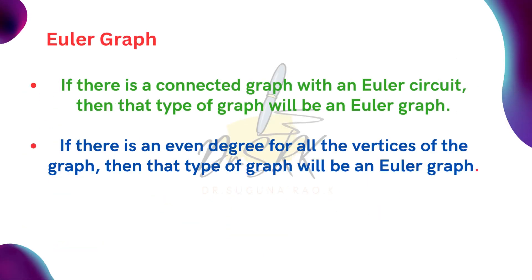The last definition in this topic is Euler graph. What is an Euler graph? If there is a connected graph with an Euler circuit, then the type of graph will be an Euler graph. If there is an even degree for all the vertices of the graph, then the type of graph will be an Euler graph.